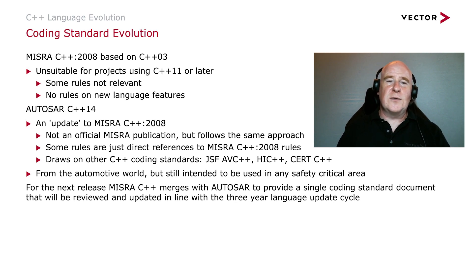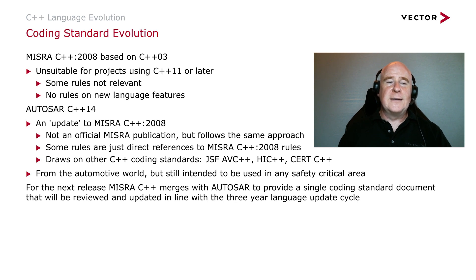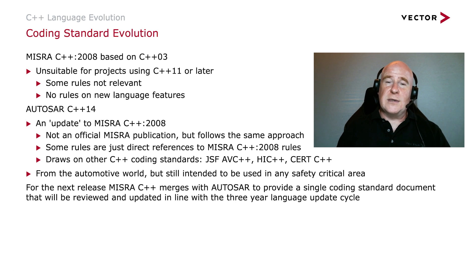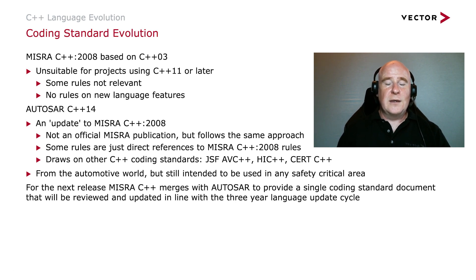MISRA released a C++ coding standard in 2008, based on the current standard at the time, which was C++03. This means it's not particularly suitable for projects using modern C++ or C++11 and later — some rules aren't relevant, and there's no guidance on the new language features. There was an AUTOSAR coding standard that came out, which can be thought of as an update to MISRA C++ 2008. It's not an official MISRA coding standard but follows a very similar approach. Although it's from the automotive world, it's still intended to be a general purpose coding standard for safety-critical areas. For the next release of MISRA, it merges with AUTOSAR to provide a single coding standard document that will be reviewed and updated in line with the three-year language update cycle.